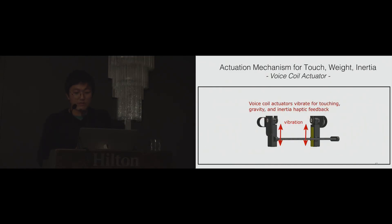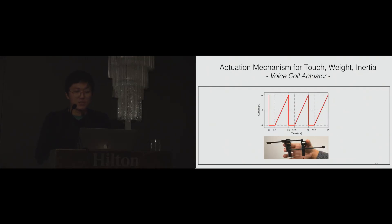Two voice coil actuators give various haptic feedbacks such as touching, gravity, and inertia. Voice coil actuators are basically speakers, and we can generate vibration with various frequencies and amplitudes independently using the actuators. The input current signals show how to create virtual forces for weight simulation. We see that the current goes negative with a step function and goes positive linearly. This pattern makes the voice coil actuators move downward quickly and move up slowly. Then the asymmetric vibration generates the downward virtual force.